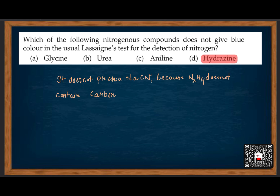Which of the following nitrogenous compounds does not give blue color in the Prussian blue test for detection of nitrogen? Hydrazine has carbon-nitrogen bond. Urea also has carbon-nitrogen. Aniline also has carbon-nitrogen bond. So the compound that does not give blue color would be carbon nitrogen containing compound.